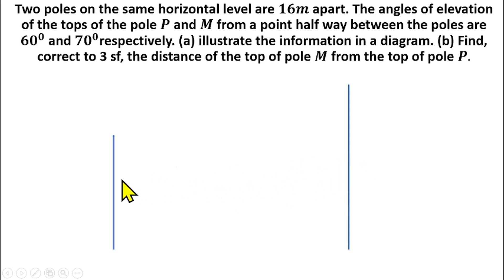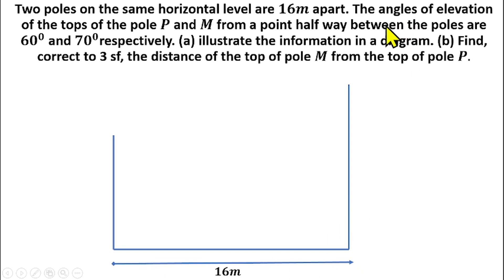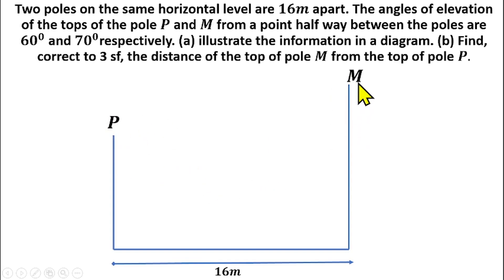The two poles are not of the same length — I will show you why very soon. The distance between the two poles is 16 meters. We are told that the angles of elevation are from the tops of the poles labeled P and M. So I will label the top of the first pole P and the top of the second pole M.